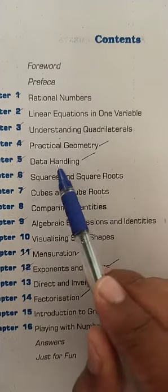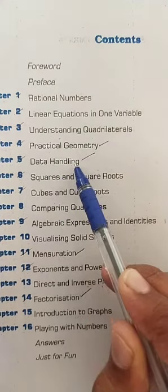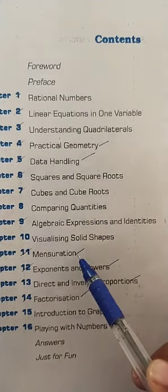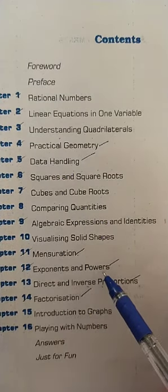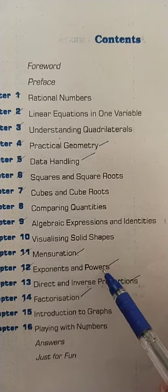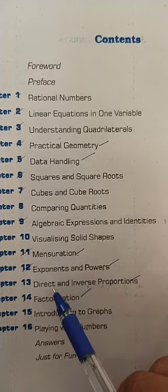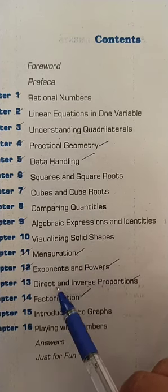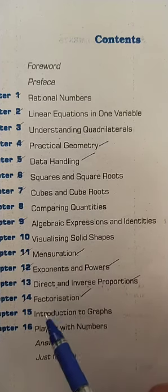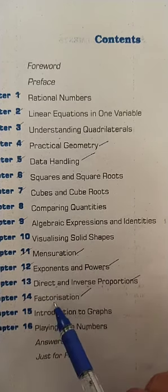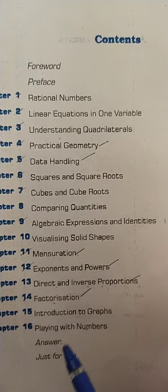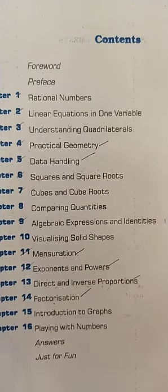The first one is practical geometry, second one is data handling, third one is mensuration, fourth one is exponents and powers, fifth one is direct and inverse proportion, and sixth is factorization. These are the six topics for your annual examination. So for revision, I am going to start with exponents and powers.